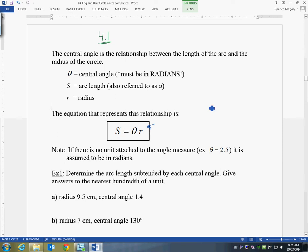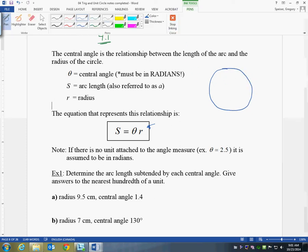S is going to be the arc length subtended by an angle. Boy, that's a crazy word, subtended. It kind of just means created. I'm going to try my darndest here to make an actual circle. Hey, that's not bad.